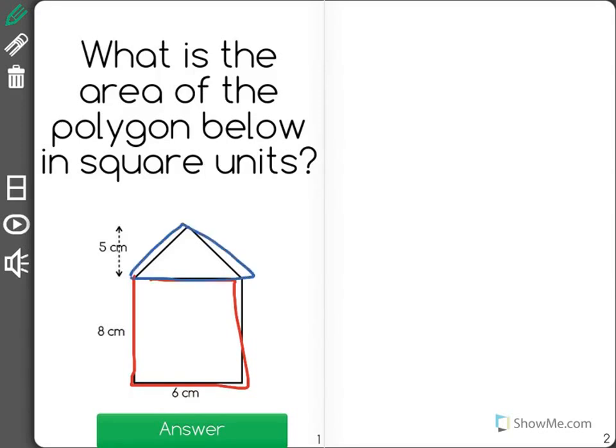The area of a rectangle is its base times its height. So the area of the rectangle is just 6 times 8, which is 48 square centimeters. And the area of a triangle is one-half base times height.